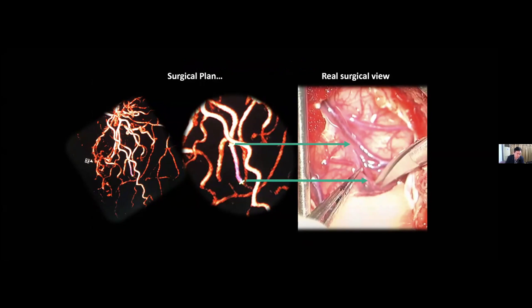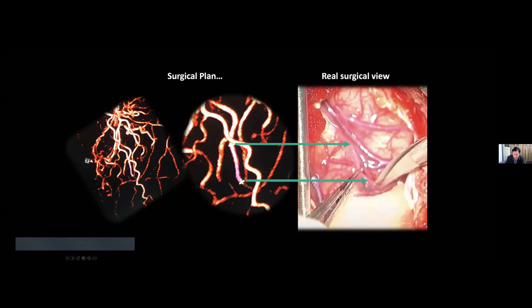This is our surgical plan, using the rear surgical angle and position. This is the rear surgical view. We can see the three-dimensional DSA showing exactly the same anatomy of the vessels as the real surgical view.